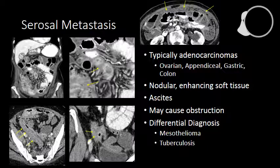This obstruction is often treated with palliative diversion of the GI tract with an ileostomy. If you see nodular masses along the small bowel or peritoneal carcinomatosis, there is a differential diagnosis that would include peritoneal mesothelioma or peritoneal tuberculosis. However, these are less common in our populations than peritoneal carcinomatosis from metastatic disease.